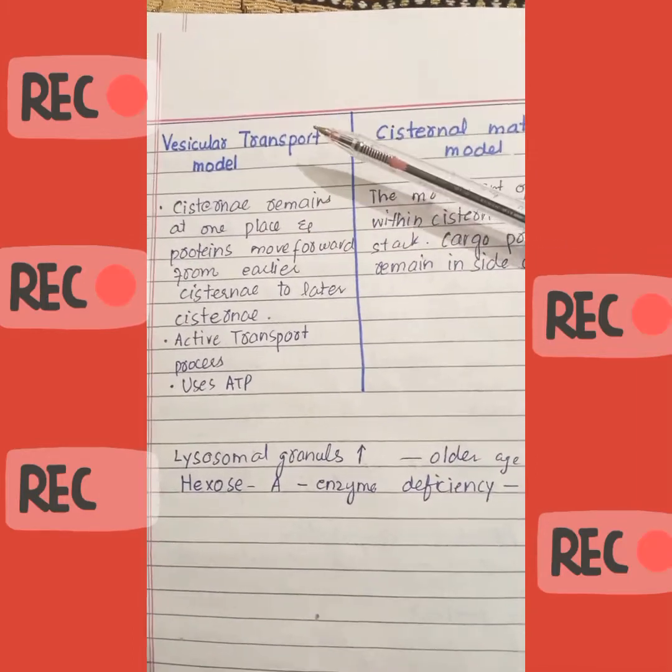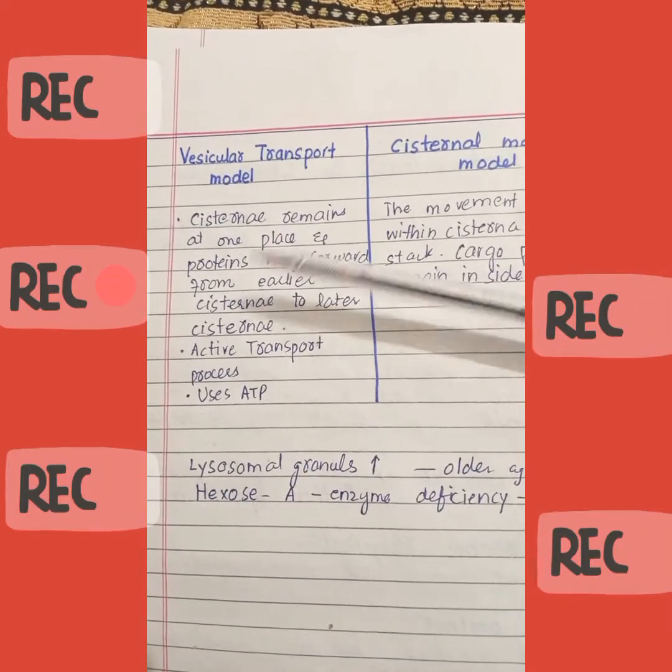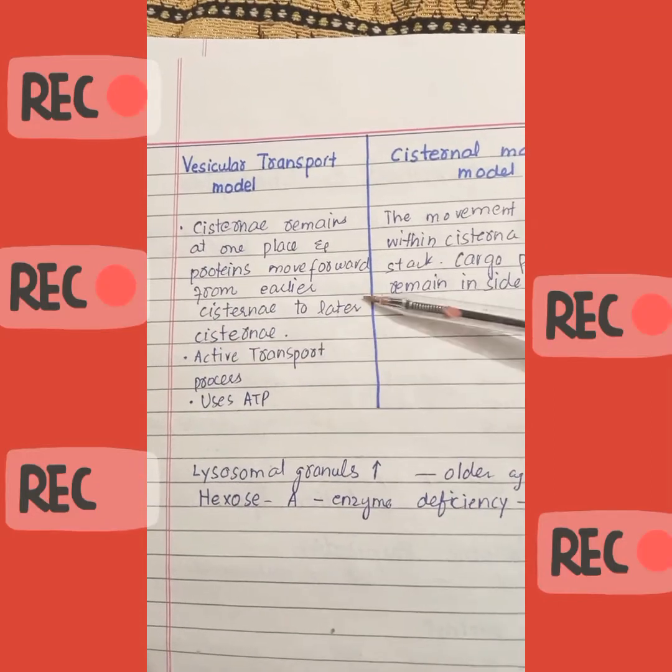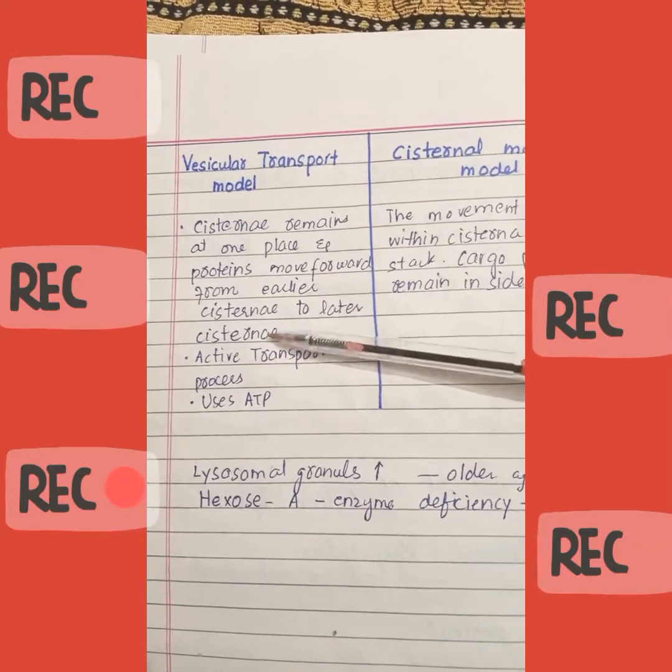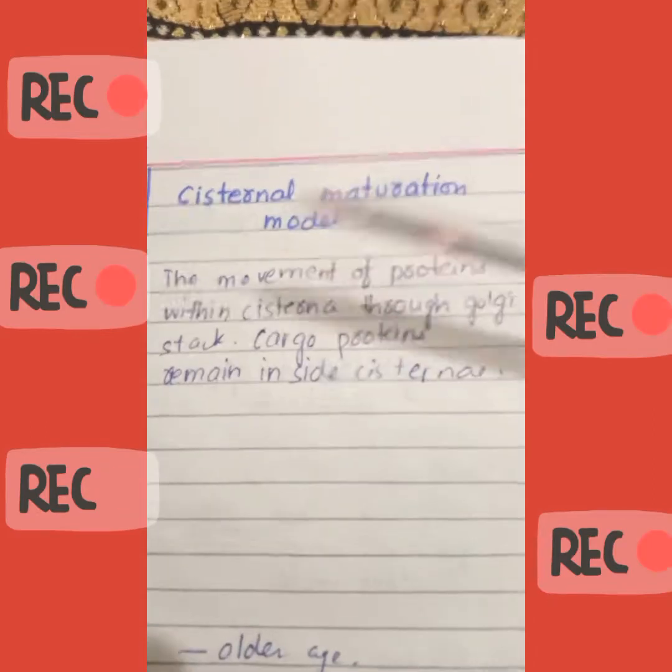In the vesicular transport model, the cisternae remain at one place and the proteins move forward from earlier cisternae to later cisternae. This process involves active transport and uses ATP.